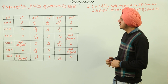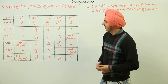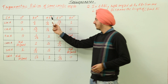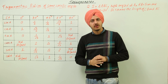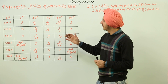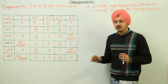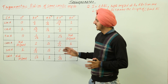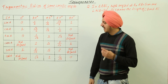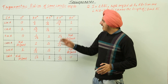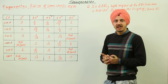The next topic is trigonometric ratios of some specific angles. These specific angles are 0°, 30°, 45°, 60°, and 90°. We are only studying the trigonometric ratios for acute angles, maximum up to 90 degrees. We will look at the values of sin A, cos A, tan A, cosecant A, secant A, and cotangent A for these various angles.